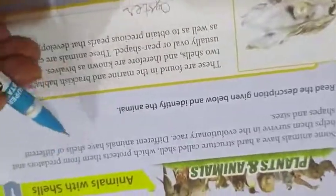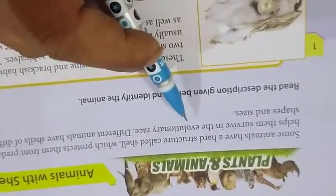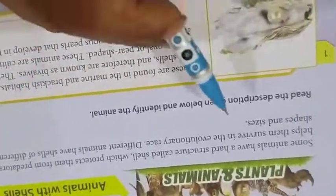Some animals have a hard structure called shell which protects them from predators and helps them survive in the evolutionary race. Different animals have shells of different shapes and sizes. Here you have to read the description given below and identify the animals.